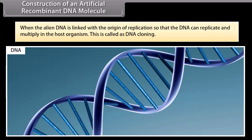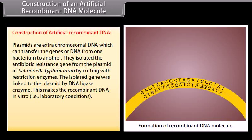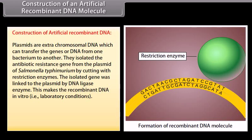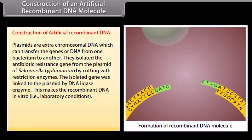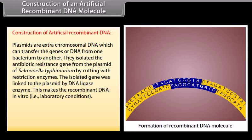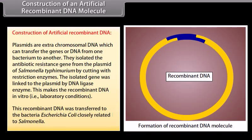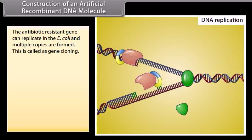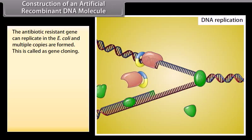Construction of an artificial recombinant DNA molecule. When the alien DNA is linked with the origin of replication so that the DNA can replicate and multiply in the host organism, this is called DNA cloning. Plasmids are extra-chromosomal DNA which can transfer the genes or DNA from one bacterium to another. They isolate the antibiotic resistance gene from the plasmid of Salmonella typhimurium by cutting with restriction enzymes. The isolated gene was linked to the plasmid by DNA ligase enzyme. This makes the recombinant DNA in vitro, that is, under laboratory conditions. This recombinant DNA was transferred to the bacteria Escherichia coli, closely related to Salmonella. The antibiotic resistance gene can replicate in E. coli and multiple copies are formed. This is called gene cloning.